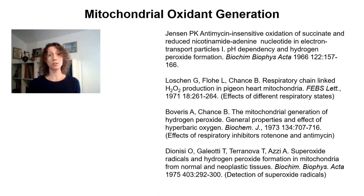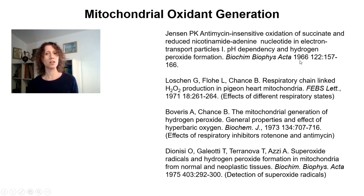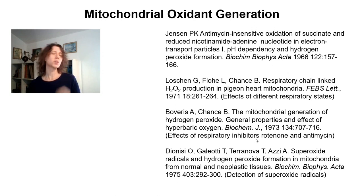When we talk about reactive oxygen species or free radicals or oxidants in mitochondria, often we think this is a very modern science and that we're looking at redox signaling just in the last few years. But nothing could be more different from reality. In fact, we've known that mitochondria generate hydrogen peroxide since the mid-1960s. And in the early 1970s, pioneers in the field such as Britton Chance and Alberto Boveris actually described most of the characteristics of mitochondrial oxidant generation that we know today to be true.